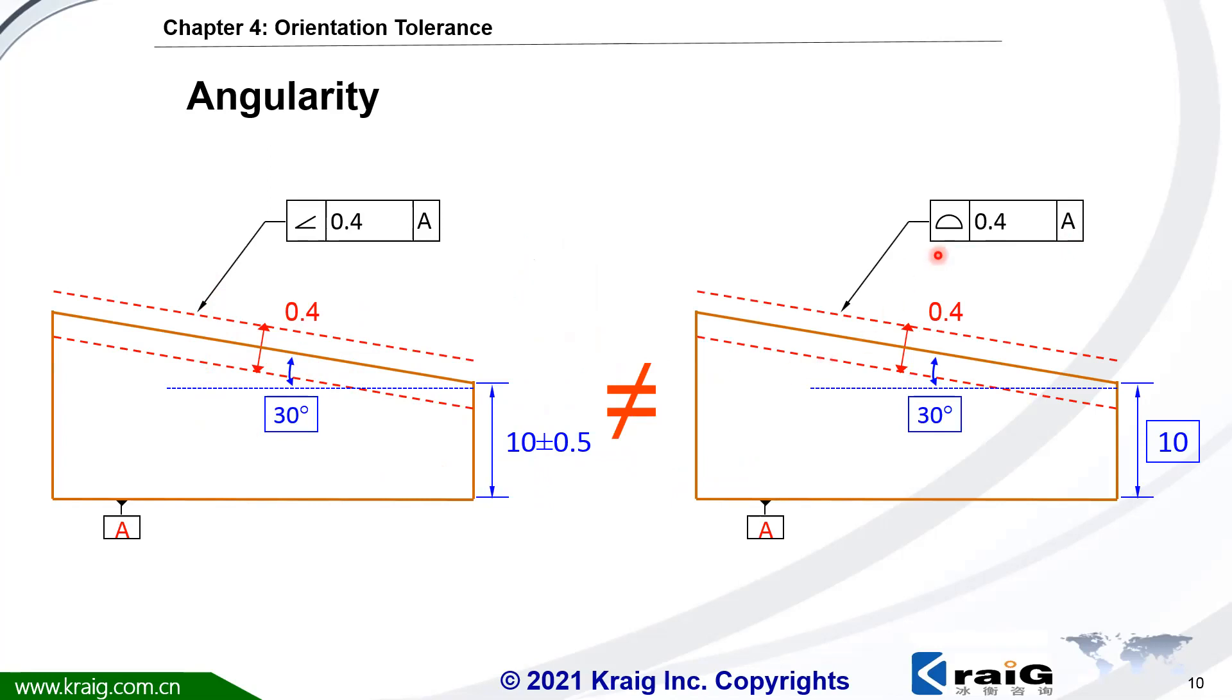But for profile tolerance, this tolerance zone is fixed at a nominal position here. There's a nominal position here. And you can see here, this is nominal, not nominal. There's a plus minus here.